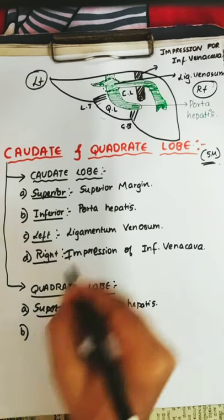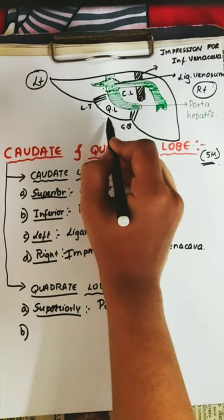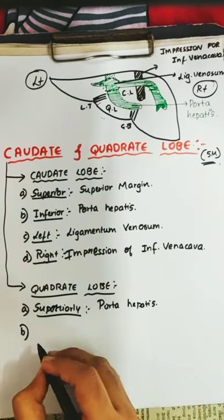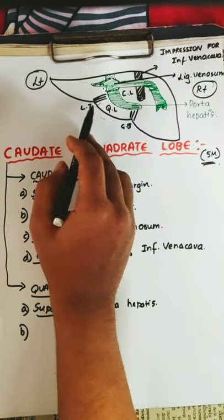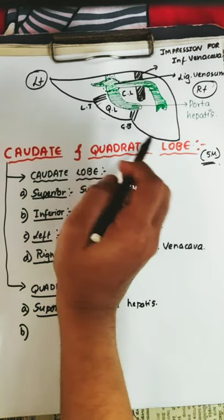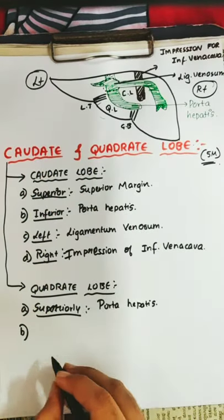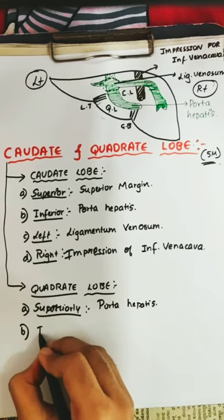And if you see the inferior border, it is continuous with the inferior margin. So this is the inferior border of the liver, and the quadrate lobe is continuous with the inferior border.